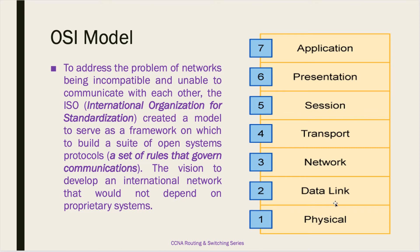After the physical layer, we have the data link layer, which is layer 2. The data link layer defines how data needs to be formatted for transmission and how access to physical media needs to be controlled. This layer typically includes error detection and correction. So this layer is responsible for formatting the data before transmission, provides a way to connect to the physical medium, and has capability for error detection and correction.